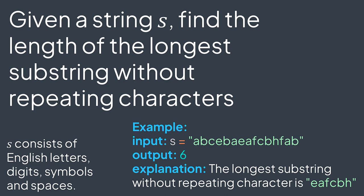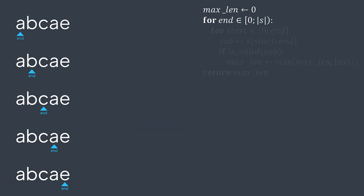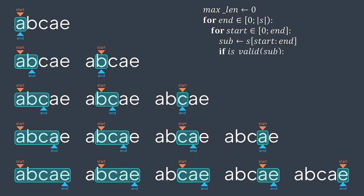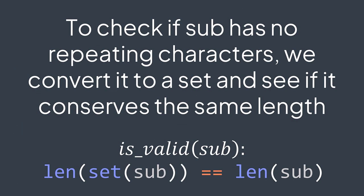To solve this problem, we can think of just traversing all the existing substrings while keeping track of the greatest length — the brute force solution. We traverse all indexes as the end of the substring; for each one we traverse all indexes before it as the beginning. For each couple start-end, we extract the substring and if it has no repeating characters, we check if its length replaces the maximum length found so far. To check if a string has no repeating characters, we convert it to a set and compare the lengths. Converting to a set removes duplicates, so if the length is still equal to the original string's length, we have no duplicates, hence no repeating characters.